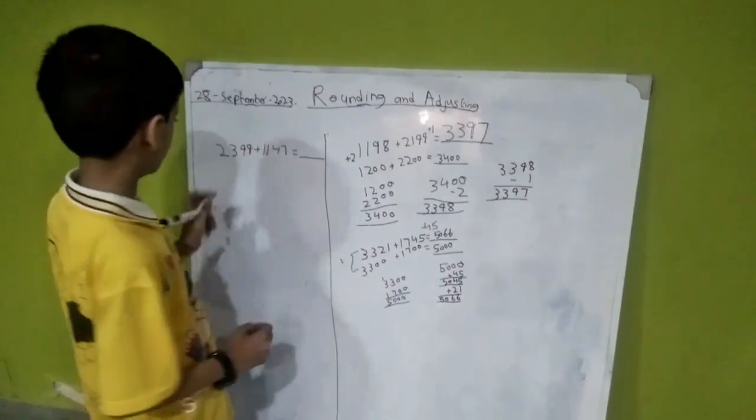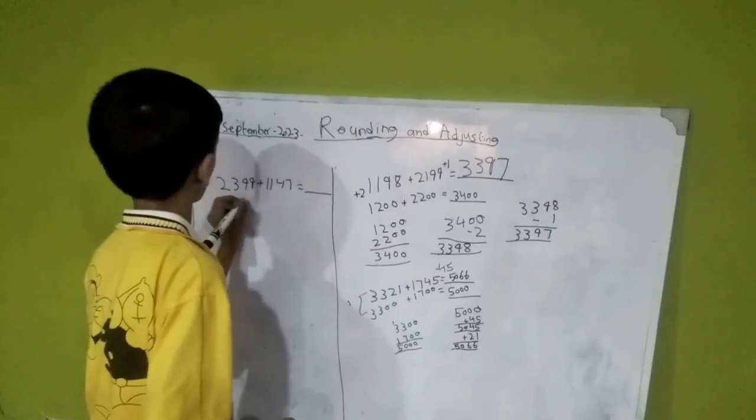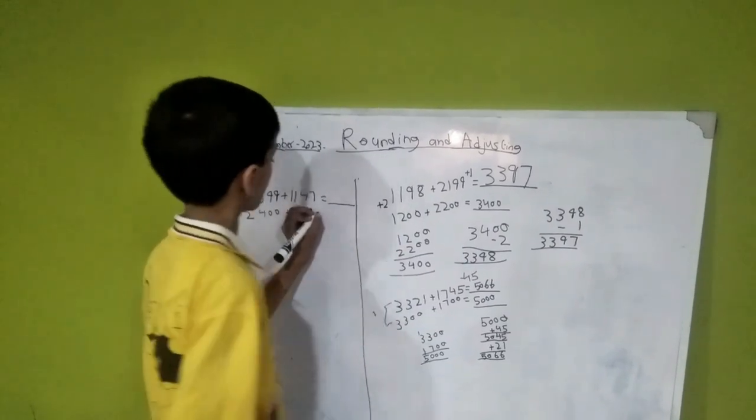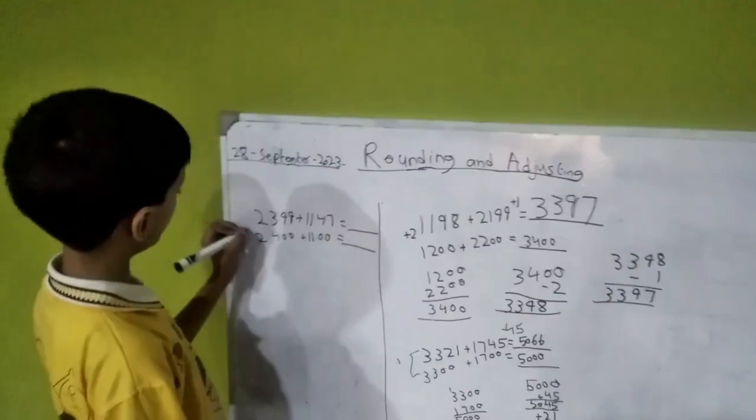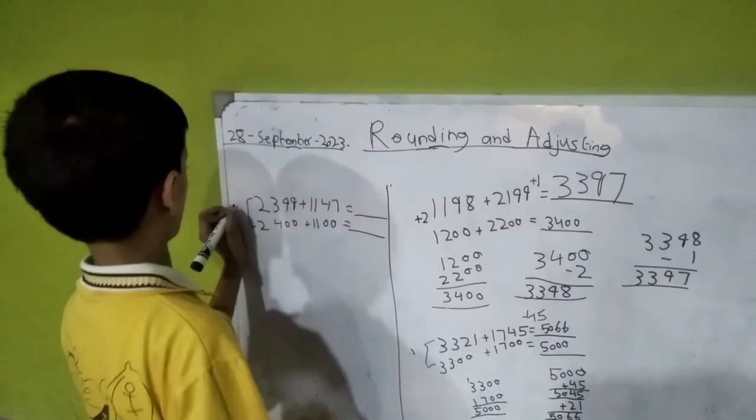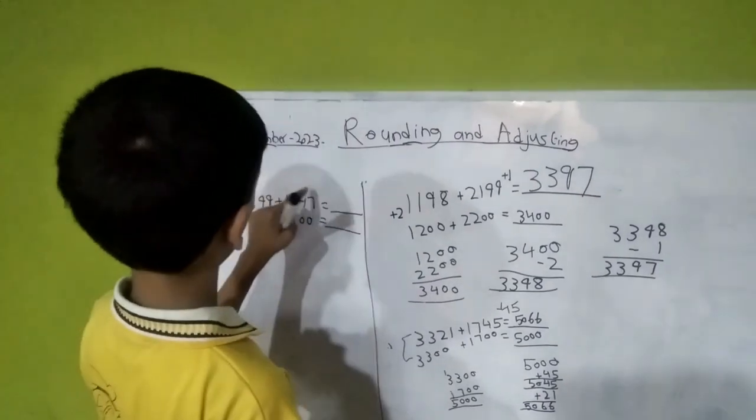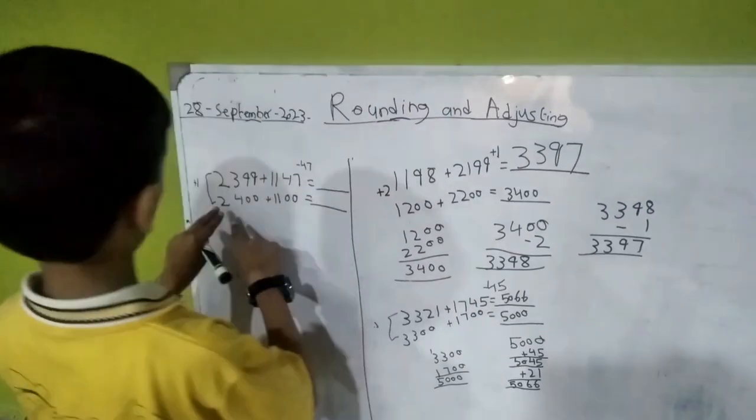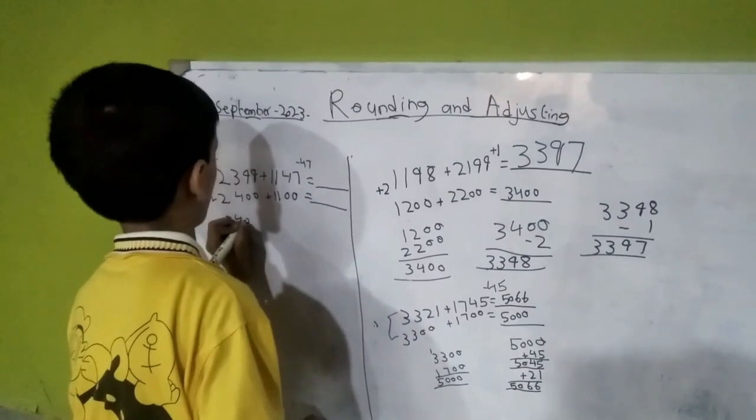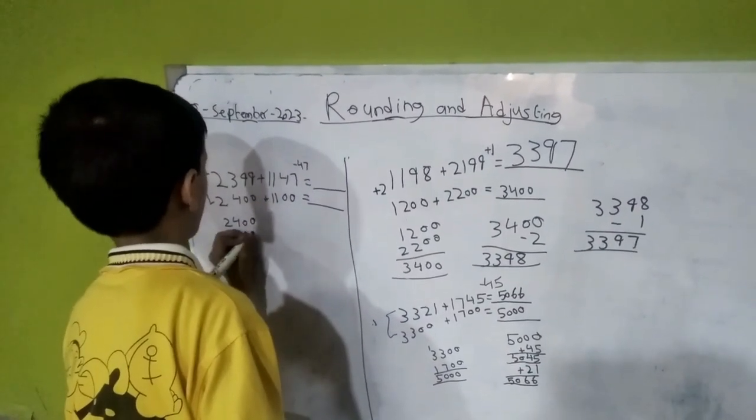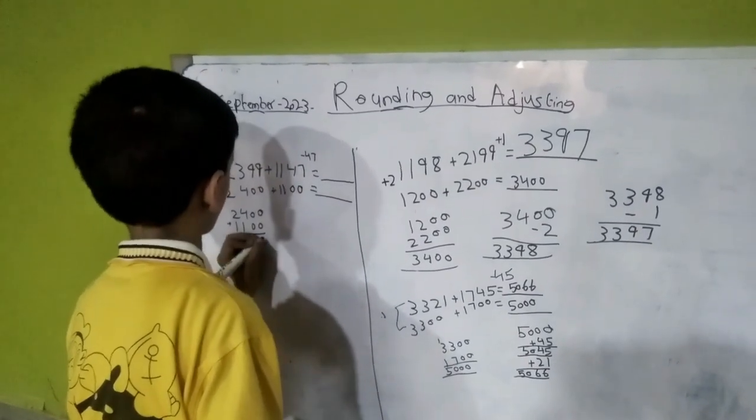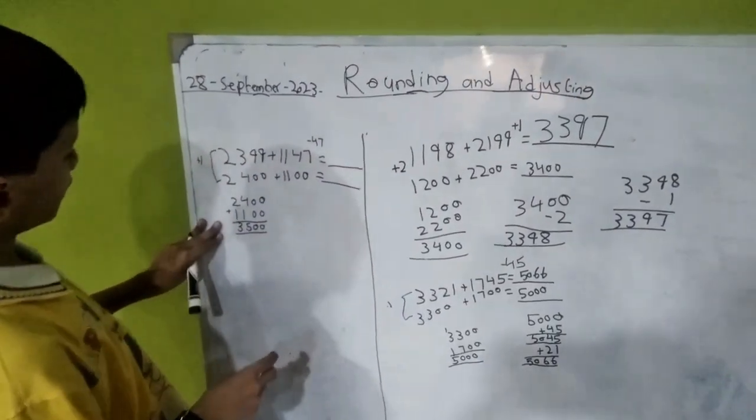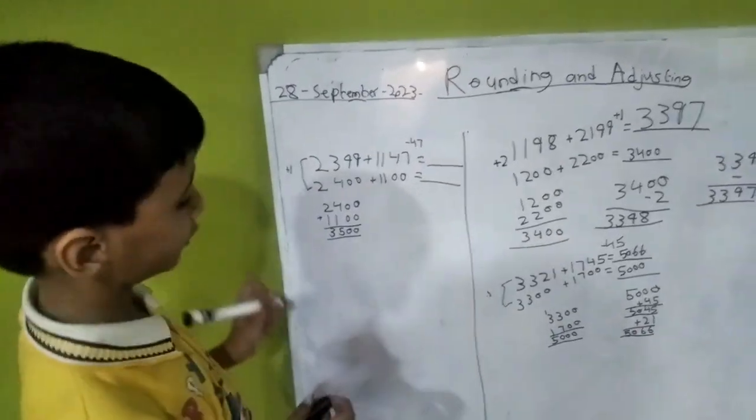Now we will round to the nearest ten. Here we have added one, and here we have subtracted 47. Now I will plus these two. My answer is 3,500. Perfect.